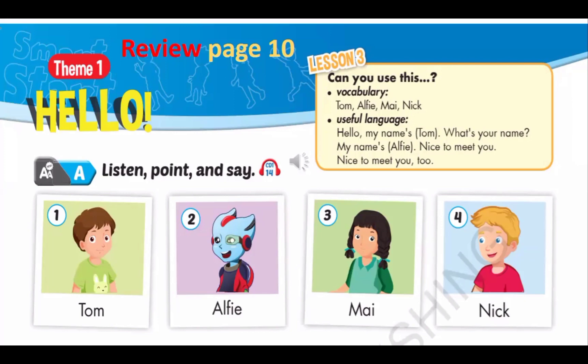Number one: Tom. Give me a T — T. Give me an O — O. Give me an M — M. What does it spell? Tom. Great.